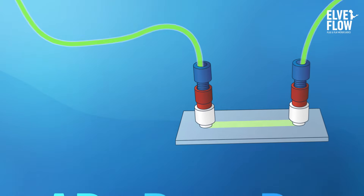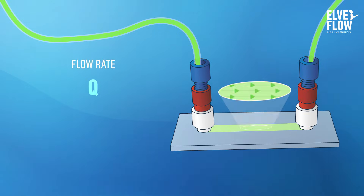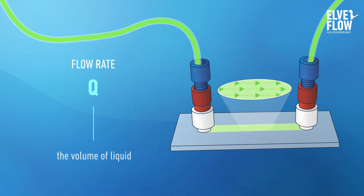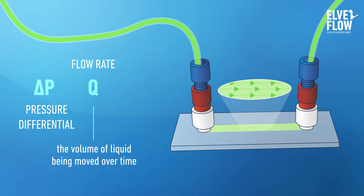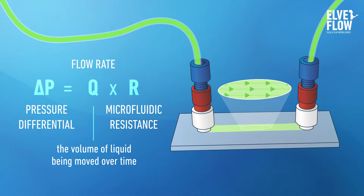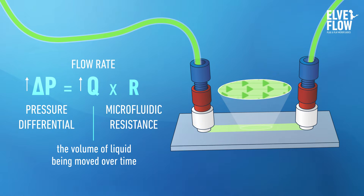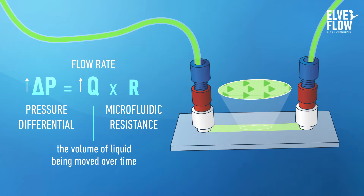The motion of a liquid is characterized by the flow rate, which is the volume of liquid being moved over time. The flow rate is proportionally related to the difference of pressure. We call microfluidic resistance the proportionality coefficient R. This characteristic of the fluidic system depends on device geometry and on liquid properties.